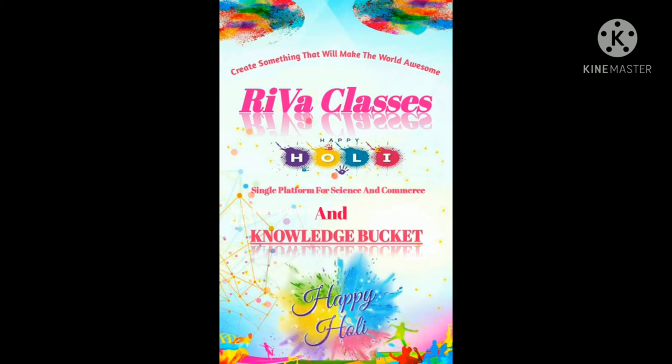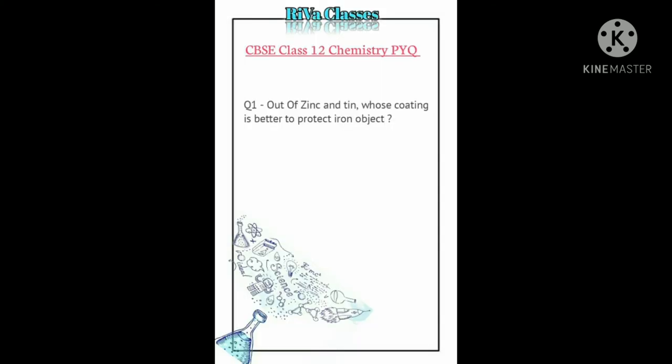Question number one: Out of zinc and tin, whose coating is better to protect an iron object? Answer: Zinc. Zinc is better than tin in protecting iron from corrosion because zinc has more affinity to oxygen than tin.